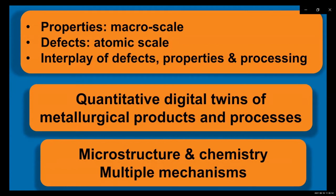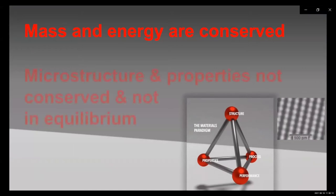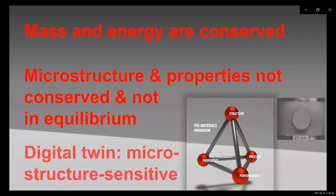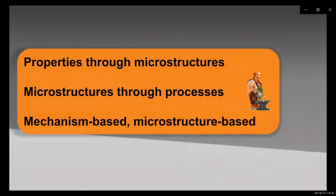We are interested in constitutive forms where multiple mechanisms are in competition and have similar barriers to become activated. A proper boundary condition treatment and good physics-based constitutive description is then very valuable. Mass and energy are conserved quantities, but microstructure and properties are not — they are amenable to processing and microstructure tuning. Any digital twin or simulation method in that field must be microstructure sensitive. In a nutshell, properties are adjusted through underlying microstructures, which are tuned through the processing history; the corresponding mechanisms and microstructure must therefore be included in simulations.